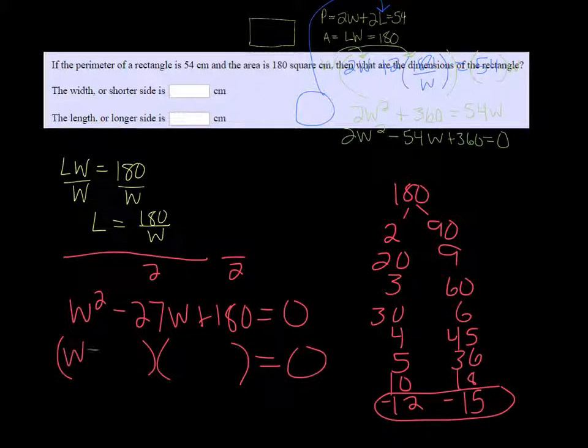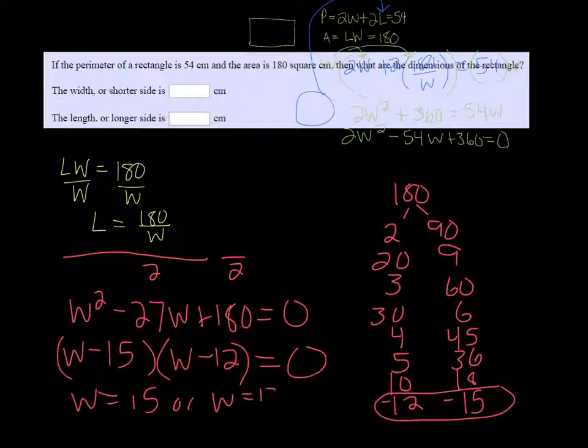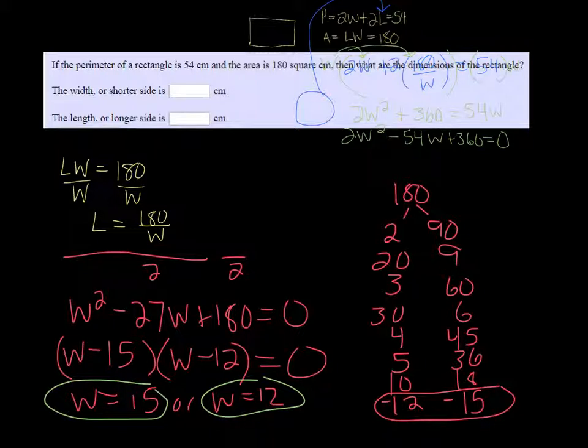So it's going to be W minus 15 and W minus 12. So we get that W is 15 or W is 12. And the reason we're getting two answers here is because there's two dimensions. There's a length and a width. So in the shorter side one, you just want to put 12, and in the longer side, 15. So one of the dimensions is actually the length, and one of them is the width.